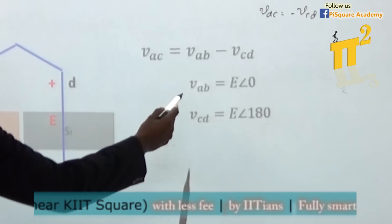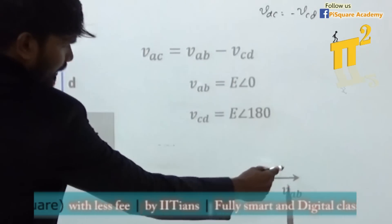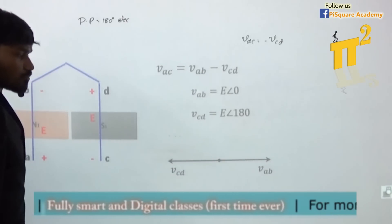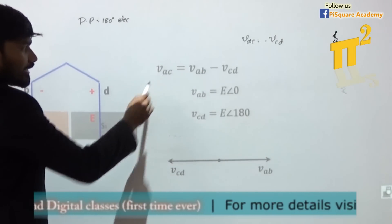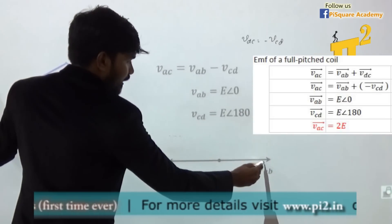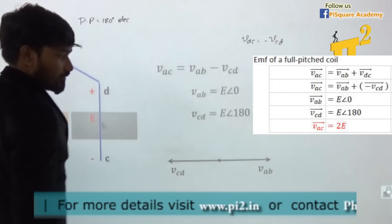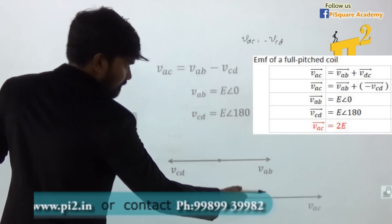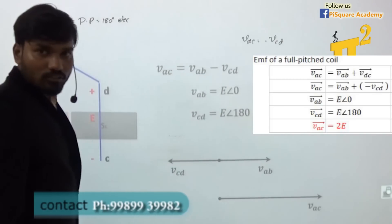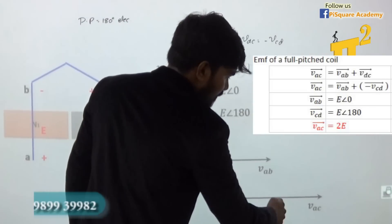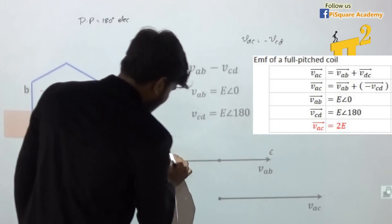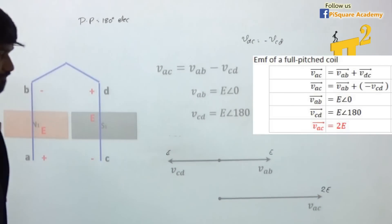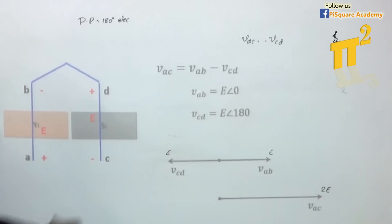If I draw the phasor diagram, VAB is E at reference, and VCD will be 180 degrees opposite. To find VAC, I compute VAB plus (minus VCD). Minus VCD flips the phasor, and adding them gives a resultant. The magnitude: if each has magnitude E, the total will be 2E.